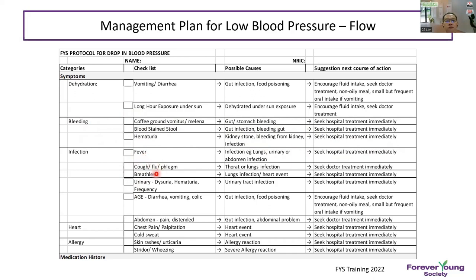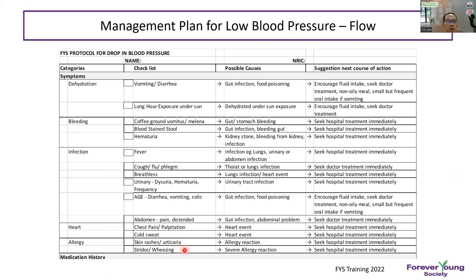Gut infection or food poisoning can cause dehydration, and endotoxins can cause septicemia. Abdominal issues like gallbladder sepsis or gastroenteritis can cause low blood pressure through sepsis. For cardiac screening, check for chest pain, palpitation, and cold sweat indicating a heart event. For allergic reactions, check for skin rashes, urticaria, stridor, or wheezing — if present, seek hospital treatment immediately.